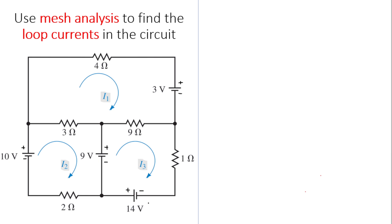That labeling will be very important during KVL, Kirchhoff's Voltage Law. Mesh analysis is basically just loops, so we need to apply KVL at each loop. KVL states that the sum of voltages in a loop equals zero.